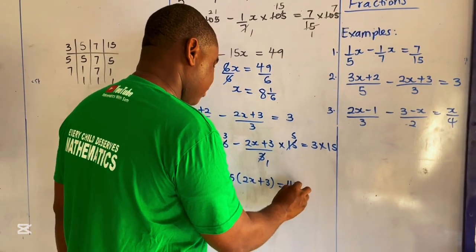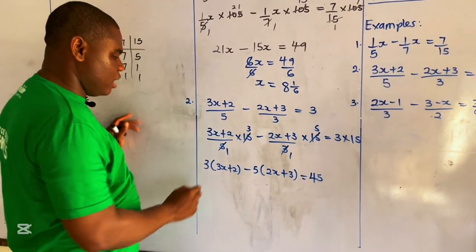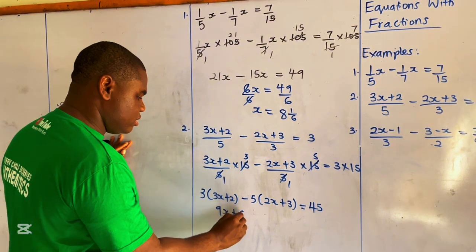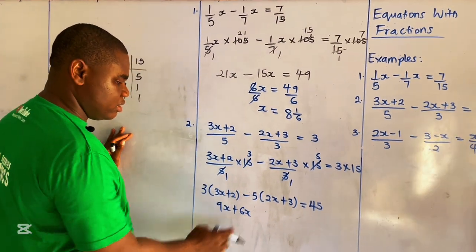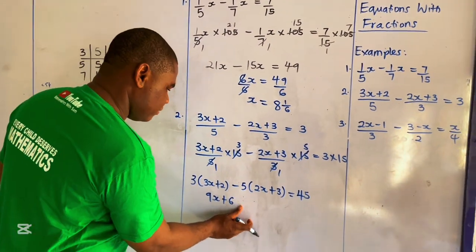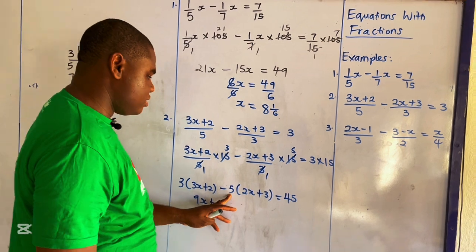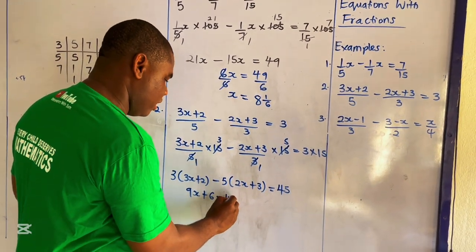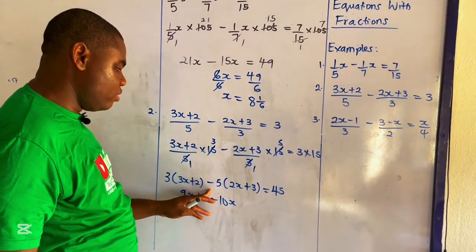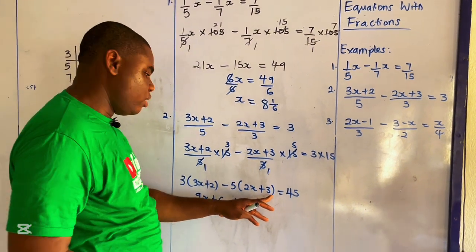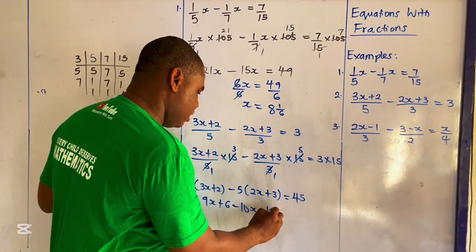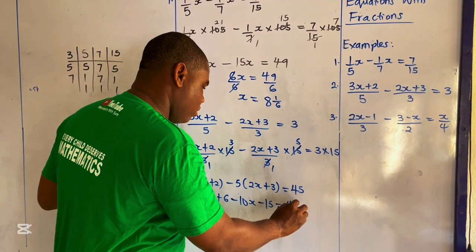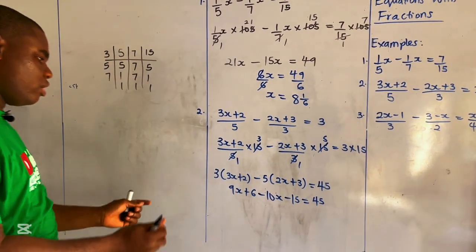Expanding: 3 times 3x is 9x, plus 3 times 2 is 6. Then minus 5 times 2x gives minus 10x, and minus 5 times 3 gives minus 15. So we have 9x plus 6 minus 10x minus 15, which equals 45.